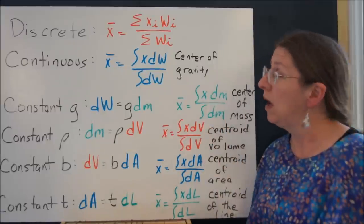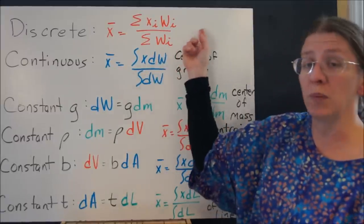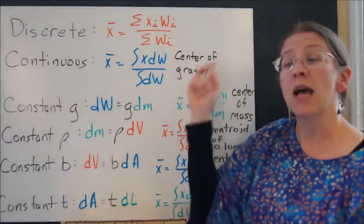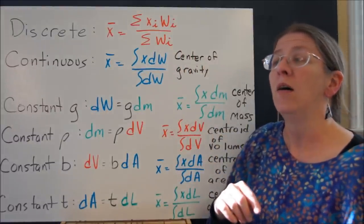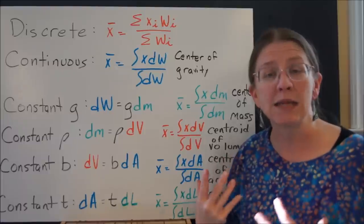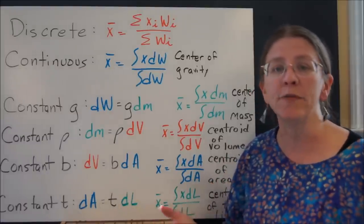And then part two, how do I use this formula, the discrete formula, to actually find centroids for all kinds of composite bodies, anything that's built up of shapes.